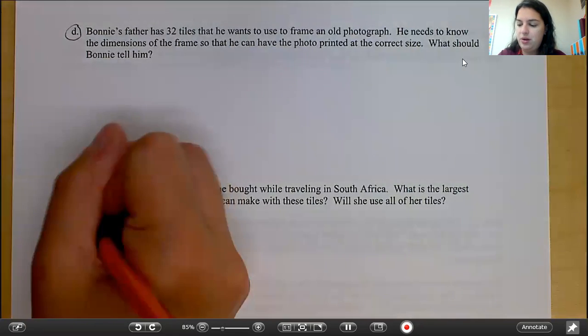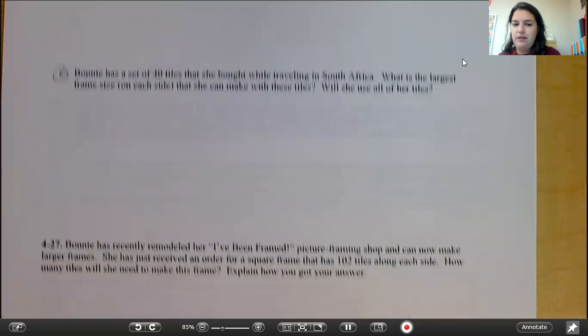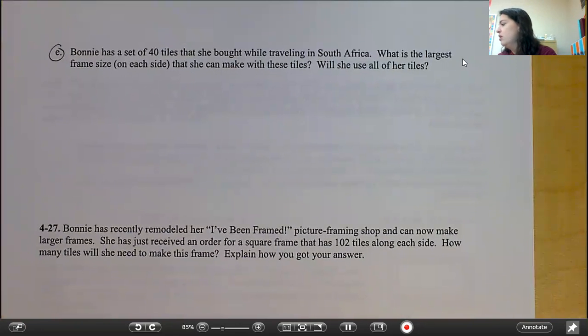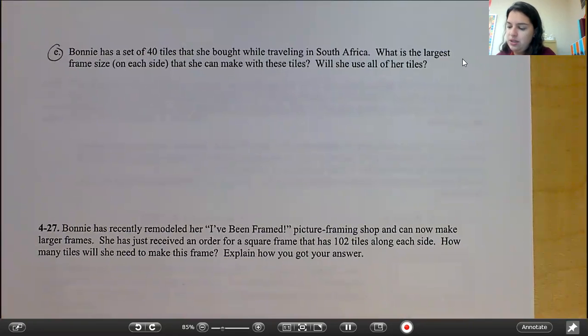Okay. If you're back with me, you answer part E. We're going to move down to 427. 427 says, Bonnie has recently remodeled her I've been framed picture framing shop and can now make larger frames. She has just received an order for a square frame that has 102 tiles along each side. How many tiles will she need to make this frame? Explain how you got your answer. So go ahead and pause the video and answer this.